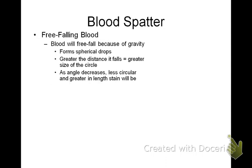Today's screencast is about blood spatter. The first kind of blood spatter evidence we're going to talk about is free falling blood. If there's no horizontal motion to the blood drop, it will free fall in a spherical drop because of gravity.